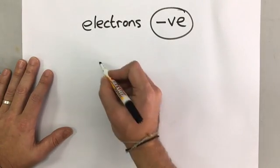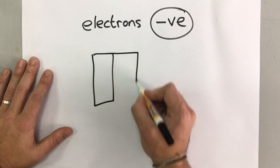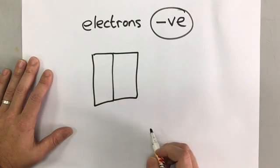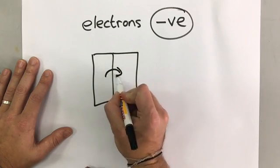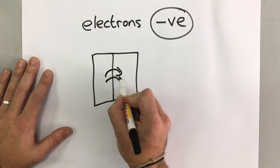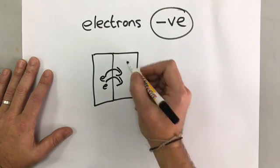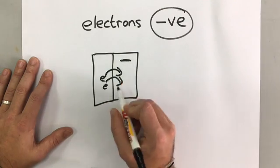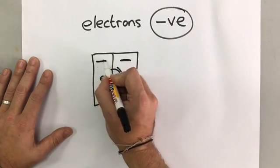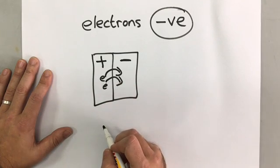So if we have two objects in contact with each other and one of them gives all the electrons over to the other one, then this one will become negative and this one will become positive because it has lost electrons.